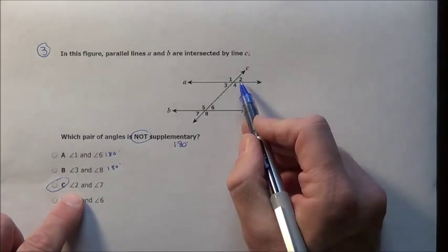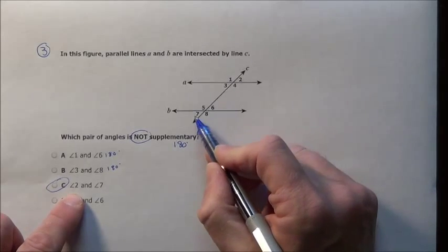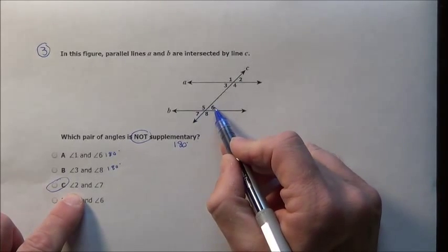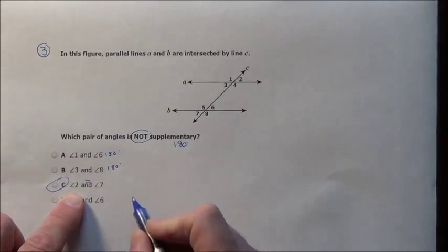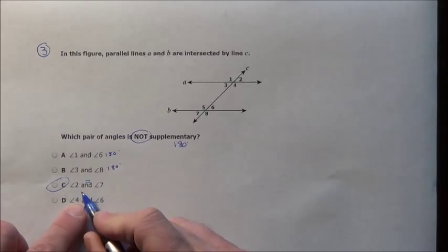But let me verify: angle 2 matches corresponding angle 6, and 6 and 7 are vertical angles, so they match. Therefore, angles 2 and 7 are actually equal to one another. They're not going to add up to 180, so I'm going to pick C.